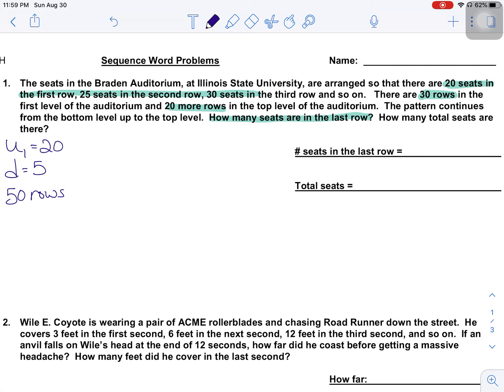So how many seats are in the last row? What I'm asking for is U sub 50 is equal to what? So let's set that up. My first term plus N is 50 minus 1 times D is 5. Throw that all into a handy-dandy calculator and you should get 265. So how many seats are in the last row? 265 seats.